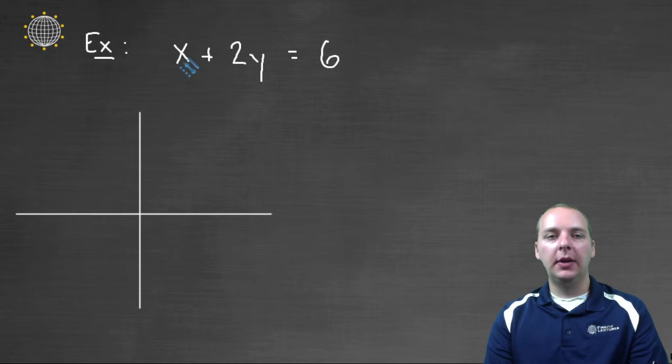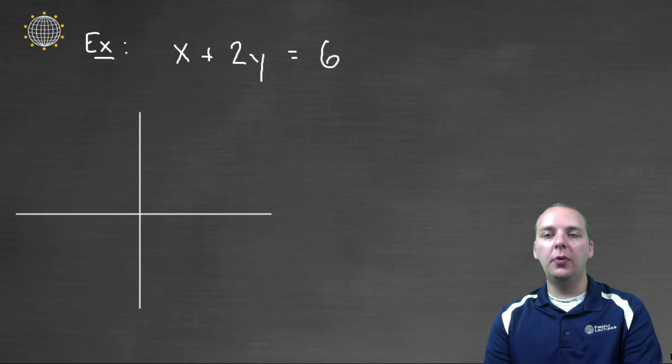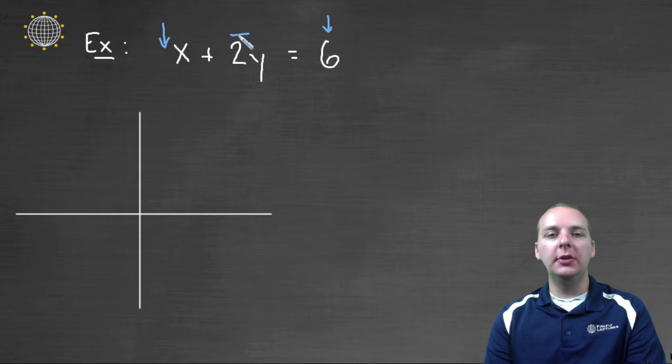Let's draw one more example. Here we have x plus two y equals six. Now you have to be careful not to make a mistake. You can't look for the slope or the y intercept right now. It's tempting to say that the slope is one, and the y intercept is six. But notice we don't have y isolated yet. Y is not solved for it. So let's do that before we do anything.